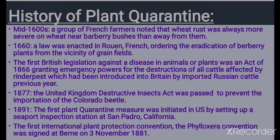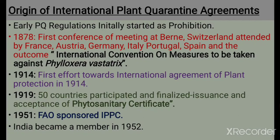In 1660, a law was enacted in France ordering the eradication of barberry plants from the vicinity of grain fields. The first British legislation against a disease in animals or plants was an act of 1866 granting emergency powers for destruction of all cattle affected by rinderpest, which had been introduced into Britain by imported Russian cattle the previous year. In 1877 the United Kingdom Destructive Insect Act was passed to prevent importation of the Colorado beetle. Then in 1891, the first plant quarantine measure was initiated in the USA by setting up a seaport inspection station at San Pedro, California. The first international plant protection convention — the Phylloxera Convention — was signed at Berne on 3 November 1881.